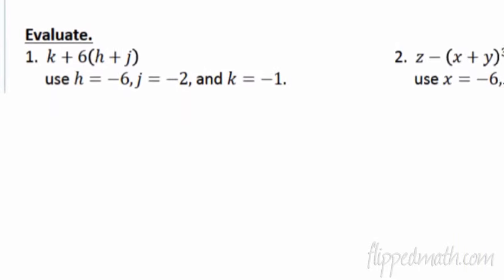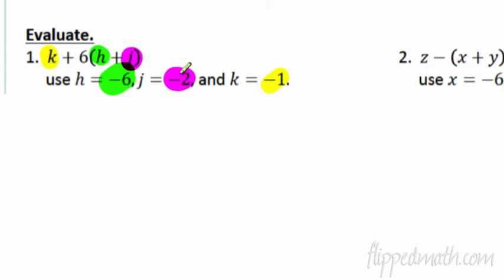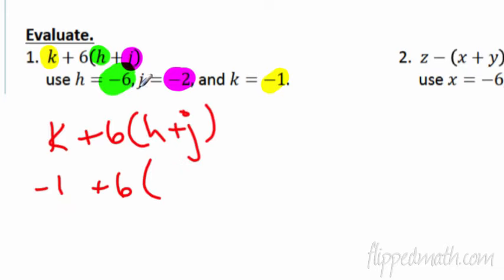Let's start with the first actual problem. The directions say to evaluate. We're going to evaluate K plus 6 times the quantity H plus J. I have some fancy smartboard tools — a yellow dot for K, green dots for H, and purple for J. That's where you substitute each one. You put the H into the H and the J into the J.